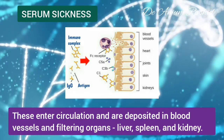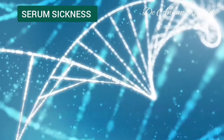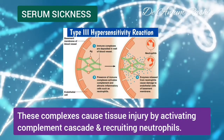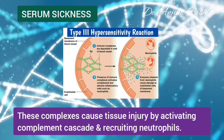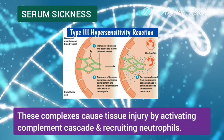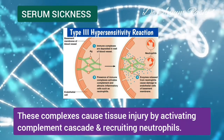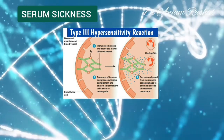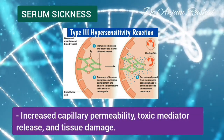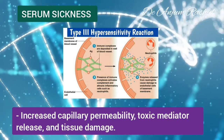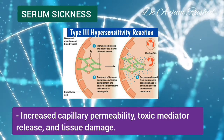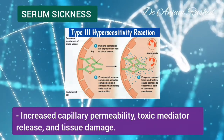liver, spleen, and kidney. These complexes cause tissue injury by activating the complement cascade and recruiting neutrophils. This results in increased capillary permeability, toxic mediator release, and tissue damage.